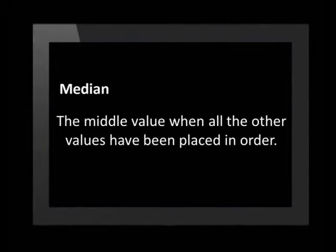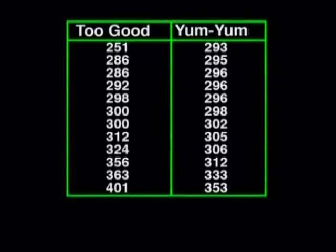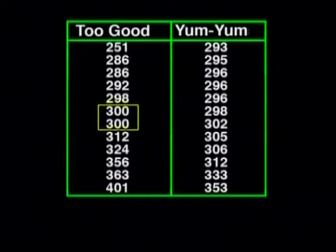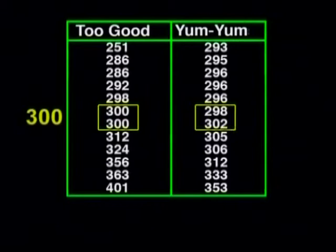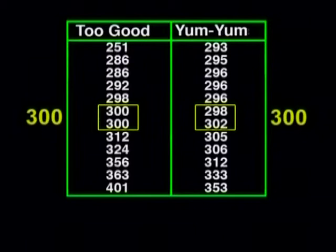The median is the middle value when all the values are placed in order. Because I have 12 values in each set, the median lies between the 6th and 7th value. So the median of the Two-Good patties lies between 300 grams and 300 grams — so it must be 300 grams. And the median of the Yum-Yums lies between 298 grams and 302 grams, so that's 300 grams. The medians are the same, so I still don't know which patty is bigger.